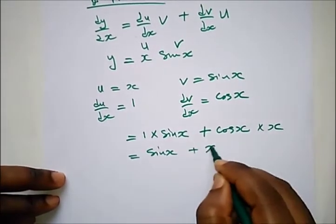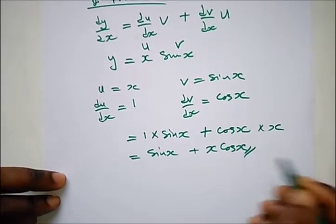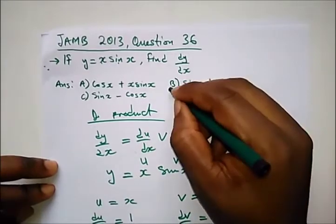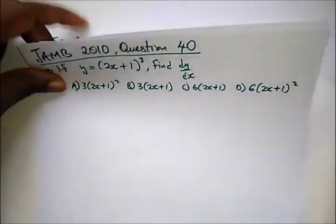plus x·cos(x). This is our final answer and the correct option is B.